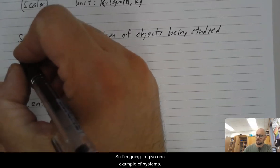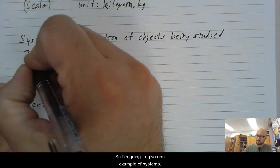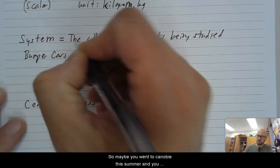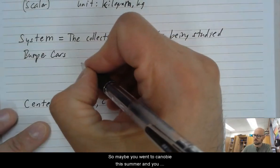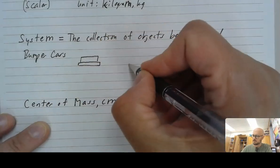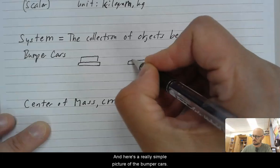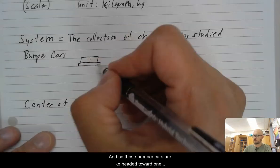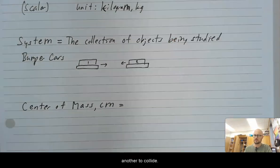So I'm going to give one example of systems, and that's going to be bumper cars. So maybe you went to Canopy this summer and you rode on the bumper cars, and here's a really simple picture of the bumper cars. There's one and there's two.